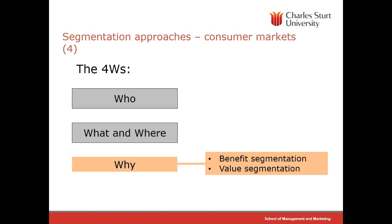The why part of this process looks at the benefits this market is chasing and the value they're trying to get. Value in marketing is defined simply as what you get relative to what you're prepared to pay. Paying is not necessarily money — it might be effort, both psychological and physical. For example, Ikea sells furniture of great benefit and value, but to some markets it's not great value because you have to install and put the furniture together yourself.